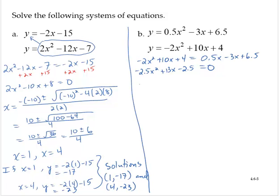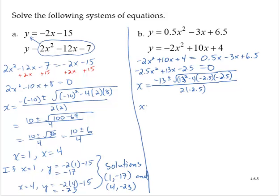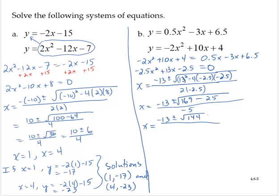Applying the quadratic formula: x equals negative 13 plus or minus the square root of 13 squared minus 4 times negative 2.5 times negative 2.5, all over 2 times negative 2.5. So x equals negative 13 plus or minus the square root of 169 minus 25, over negative 5. That gives x equals negative 13 plus or minus the square root of 144 over negative 5.